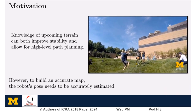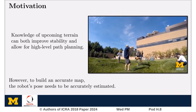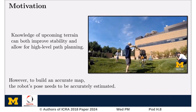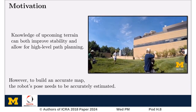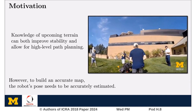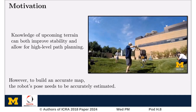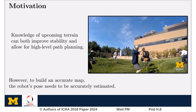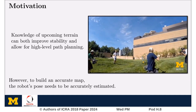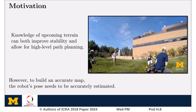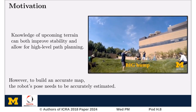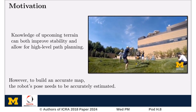Without knowledge of the upcoming terrain, legged robots can easily fall when encountering large terrain changes. Having a real-time estimate of the terrain map can not only improve stability, but allow for high-level path planning. In order to build this map, we need to be able to accurately estimate the robot's pose as it moves through the environment.